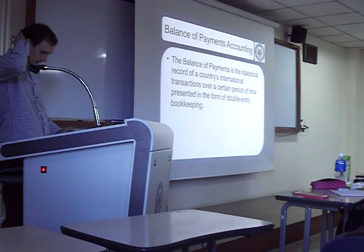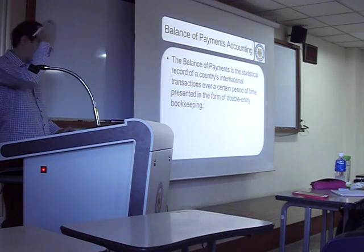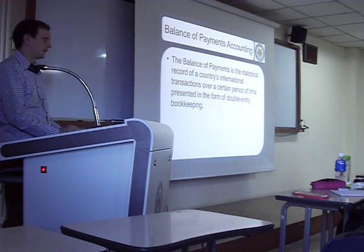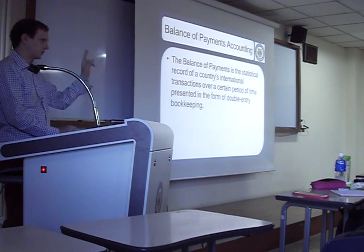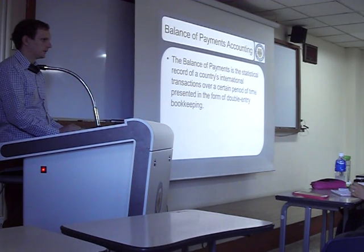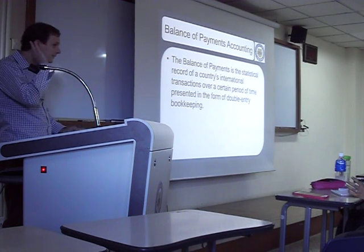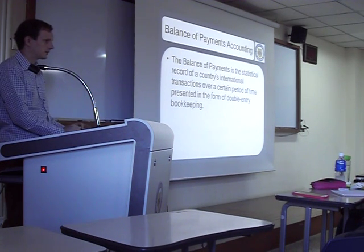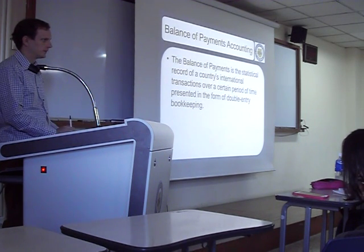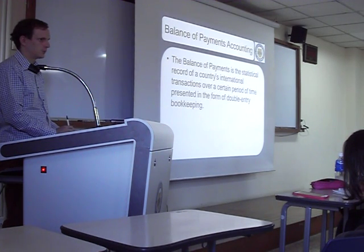What does the balance of payments contain? How is it organized? What are the two main parts? The two main accounts are the current account and the capital account. The current account measures goods and services — imports and exports.